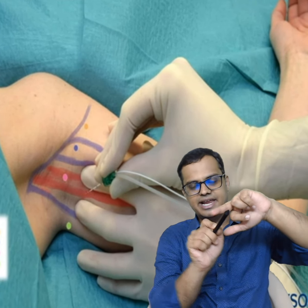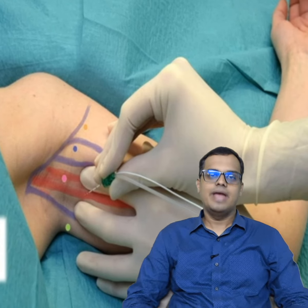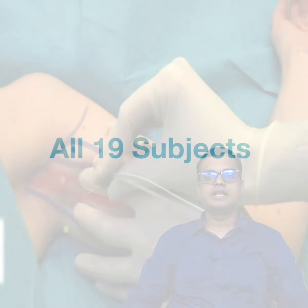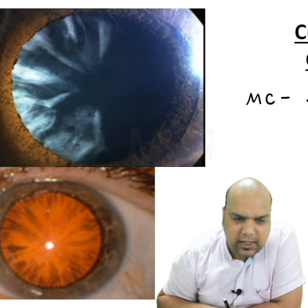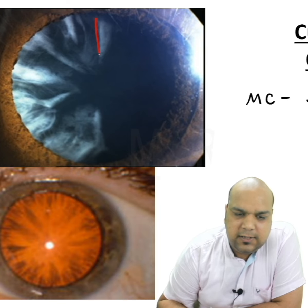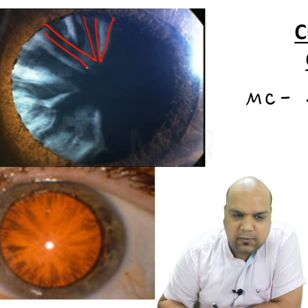Now we see the opacities in a particular shape — everybody, what is the shape? We can say pizza slices. You can remember it by pizza slices.